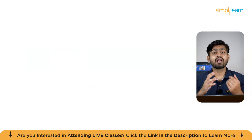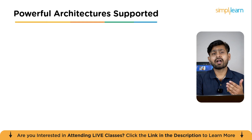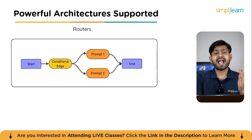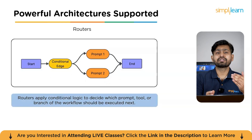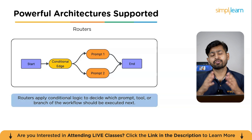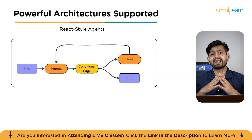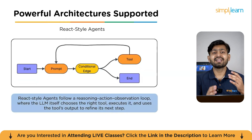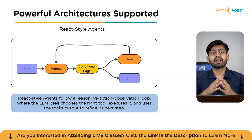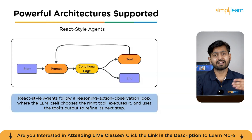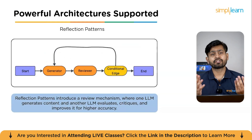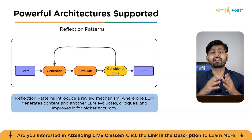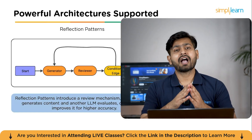LangGraph also supports several powerful architectures. First, the router architecture acts like a traffic controller, applying conditional logic to decide which prompt, tool, or branch of the workflow should be executed next. Second, the React-style agent architecture follows a reasoning-action-observation loop, where the LLM itself chooses the right tool, executes it, and uses the tool's output to refine its next step. Last is reflection patterns, which introduce a review mechanism where one LLM generates content and another evaluates, critiques, and improves it for higher accuracy.